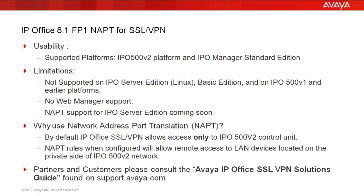So why do we use Network Address Port Translation in the first place? By default, the IP Office SSL VPN allows access only to the IP 500v2 control unit. NAT will allow you, when configured, to access LAN devices located on the private side of the IP 500v2 network.